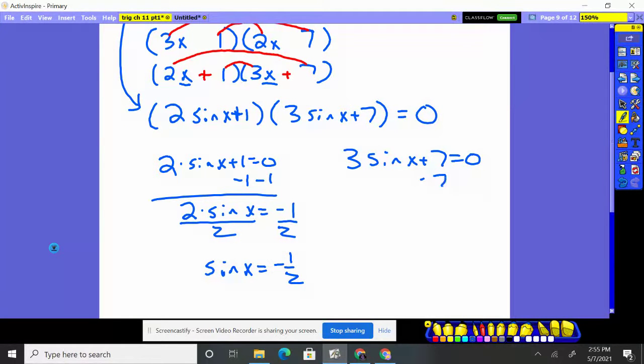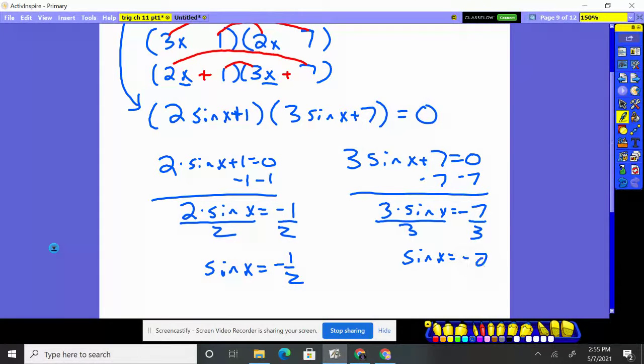Over here, we end up getting 3 times the sine of x equals negative 7. Divide by 3. We're looking for where's the sine of x equal to negative 2 and 1 third.